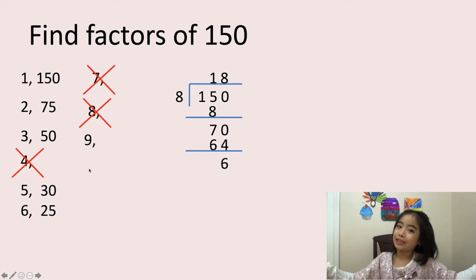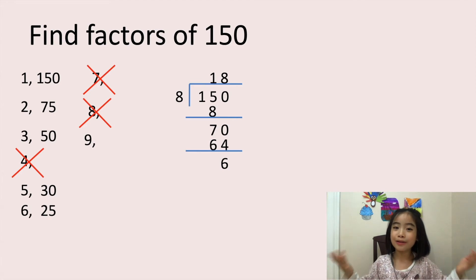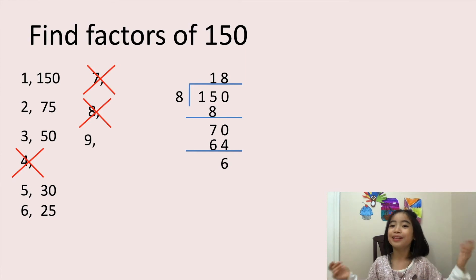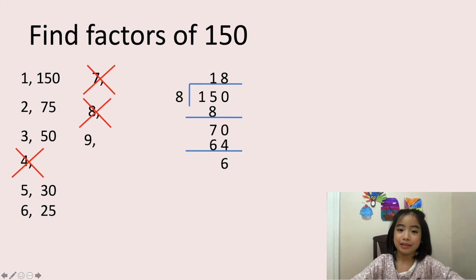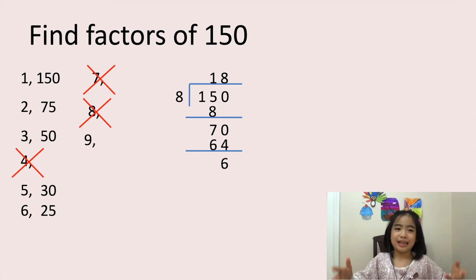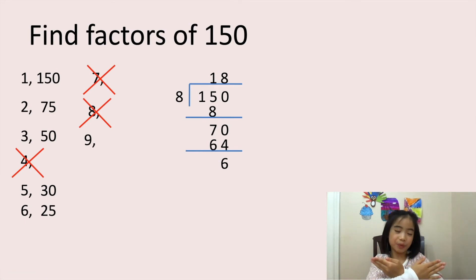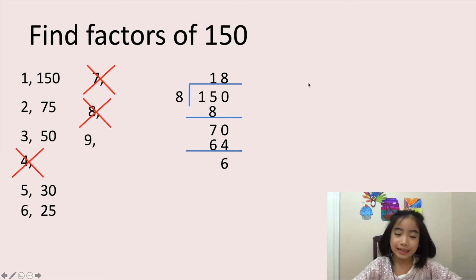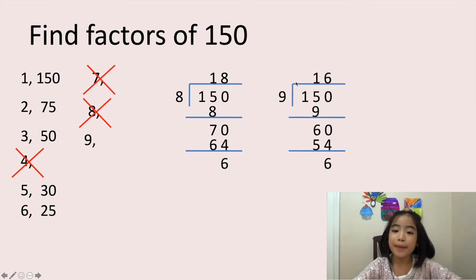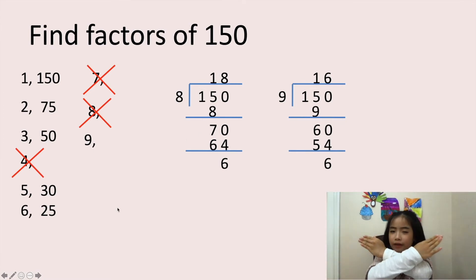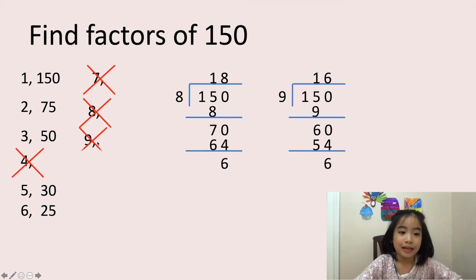Now, is 9 a factor of 150? Well, the rule is if the sum of the digits is divisible by 9, the number is divisible by 9. So let's add 1 plus 5 plus 0 equals 6. 6 is not divisible by 9 because 6 is smaller than 9. 150 divided by 9 equals 16 with a remainder of 6. So 9 is not a factor of 150. Let's cross this one out.